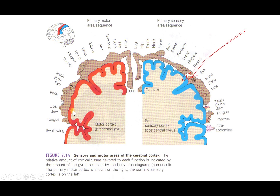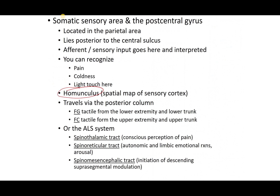Both sensory and motor representations overlap on the homunculus — they've just removed the blue on the motor side and the red on the sensory side so it's less busy. Here you can see the central sulcus, the postcentral gyrus in blue, and the precentral gyrus in red. That is the homunculus.